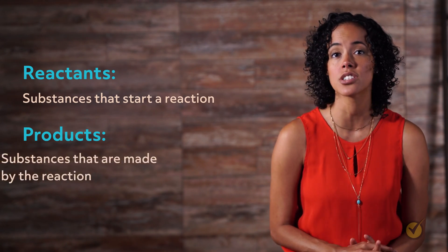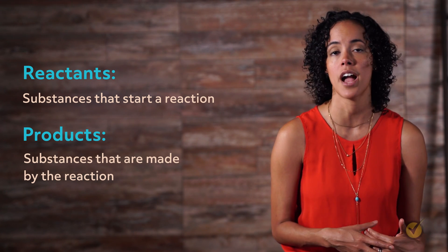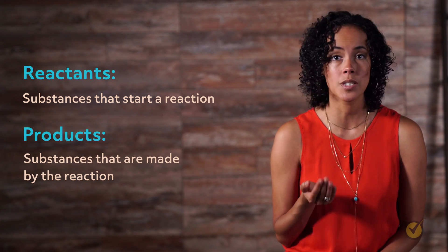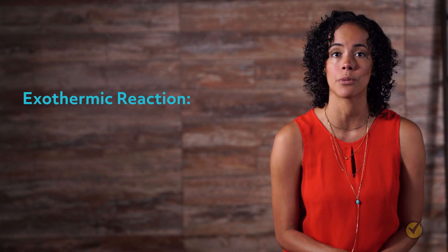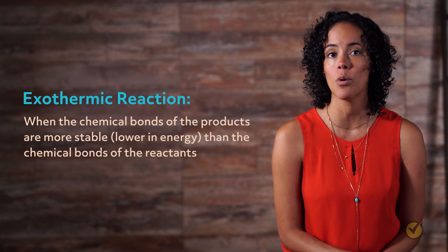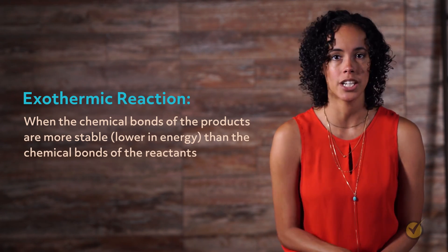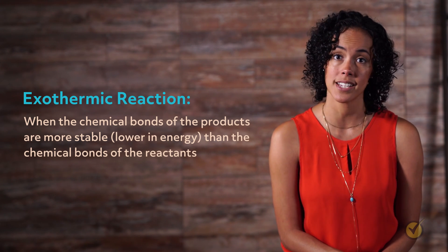All chemical reactions involve reactants and products. Reactants are substances that start a reaction and products are the substances that are made by the reaction. Because energy is produced, combustion is an exothermic reaction. This means that the chemical bonds of the products are more stable, lower in energy, than the chemical bonds of the reactants.